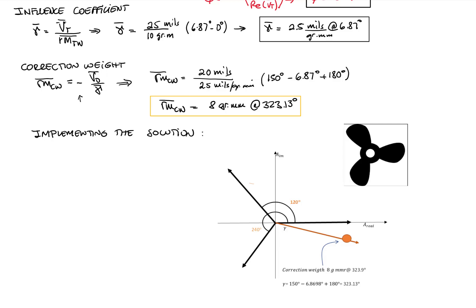One practical solution then is that we have our correction mass, and we instead add two correction masses, one at 0 degrees and another one at 240 degrees.